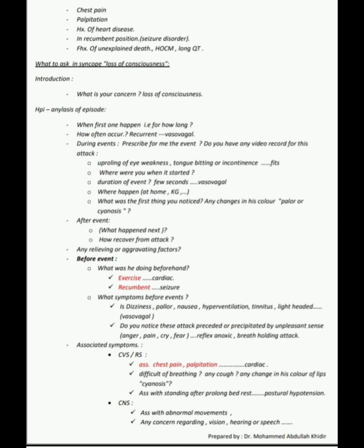When taking history for loss of consciousness, begin with the presenting concern. In the history of presenting illness, analyze the episodes: when did the first one happen, how long do they last, how often do they occur? During events, ask for a description — is there any video recording, eye rolling, weakness, tongue biting, or incontinence? Where was the child when it started, what was the duration, and where did it happen?